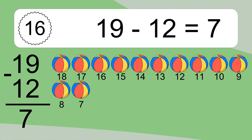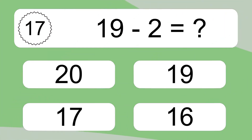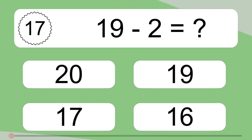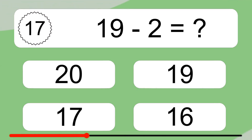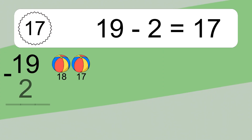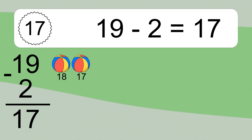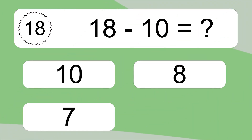19 minus 2 equals what? 19 minus 2 equals 17. Let's count it: 18, 17.